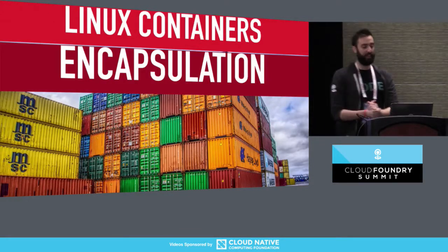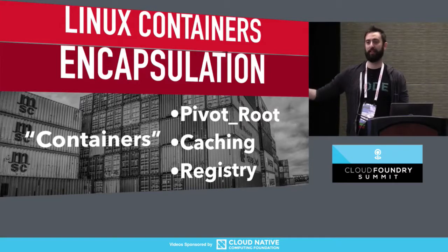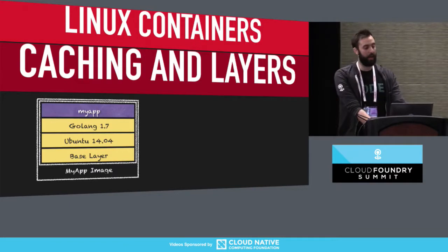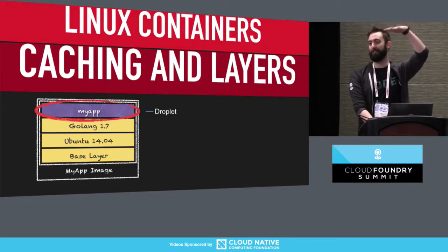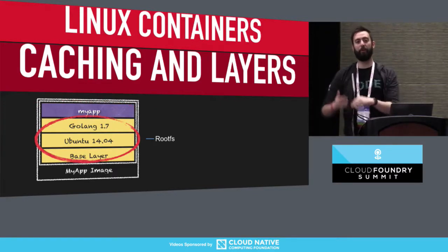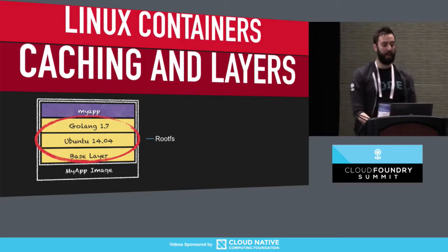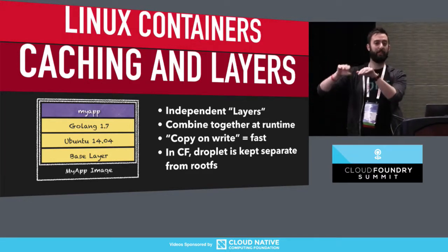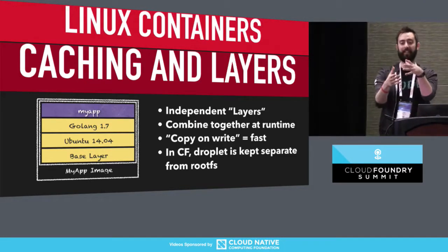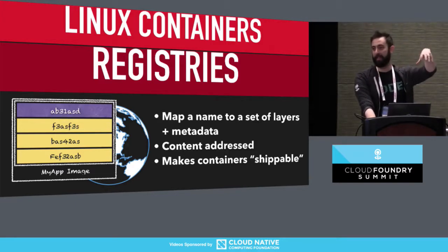That's Linux containers. Encapsulation. Containers use pivot root, a registry, and basically caching — that's the trick. The way this works is layered file systems. You have an image — in Cloud Foundry this is really a droplet. The top layer is a tar file, the other layers are the rootFS. You've got a collection of these layers and you can swap them. The other layers stay in cache, and we have file systems that combine those together using copy-on-write semantics. That's what lets you do this fast — that's what makes it shippable.